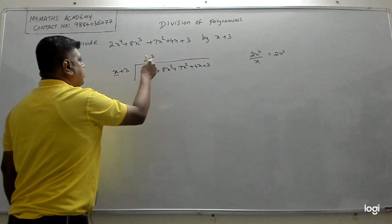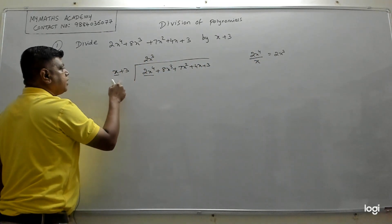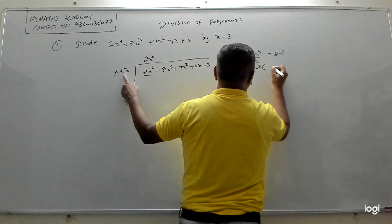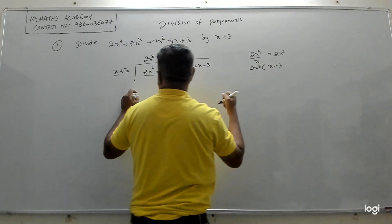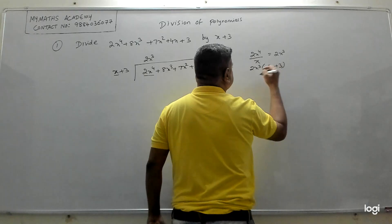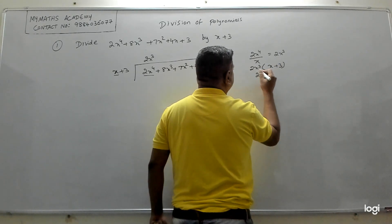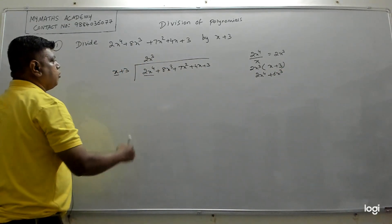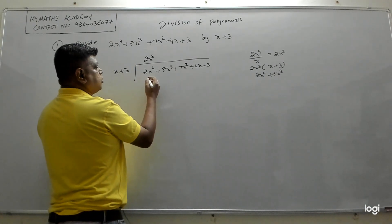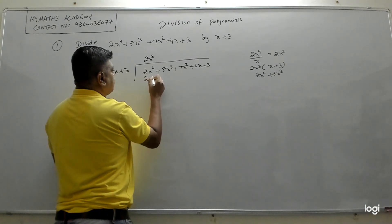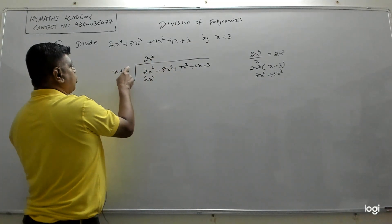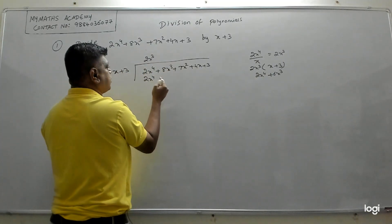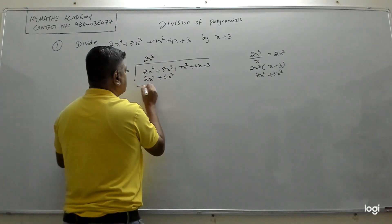With this 2x³ you have to multiply the entire divisor x + 3. So 2x³ × x = 2x⁴, and 2x³ × 3 = 6x³. Write 2x⁴ + 6x³ below the dividend.